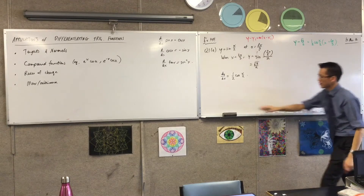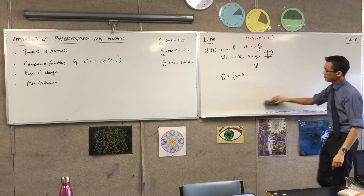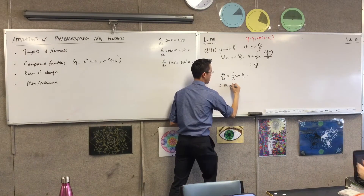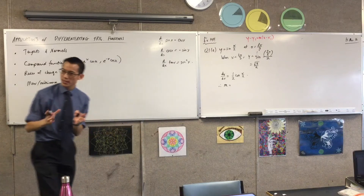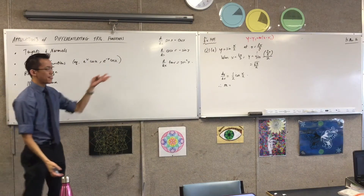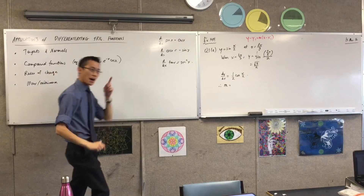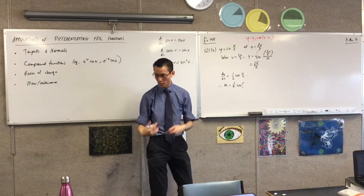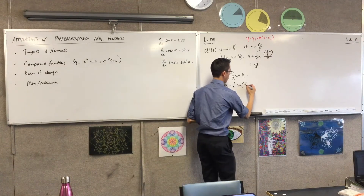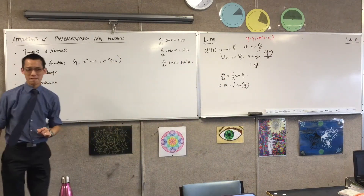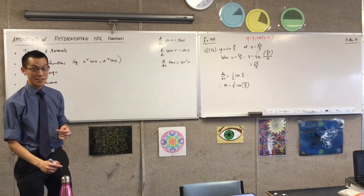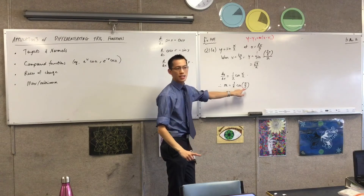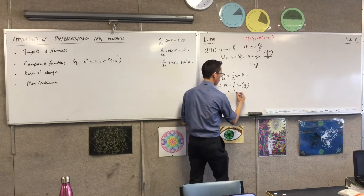Evaluate the gradient first. I'll state my gradient clearly: I distinguish between dy/dx — that's the function — and m, which is a number. So m equals ½cos(x/2) evaluated, meaning ½cos(π/3). You may still need to recalibrate: cos of 60 degrees is a half, so a half times a half gives you a quarter. m = ¼.